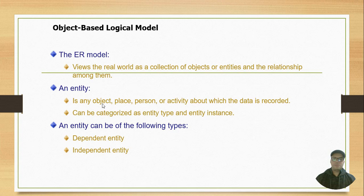An entity is any place, object, person, or activity about which the data is recorded. It can be categorized as entity type and instance. An entity can be anything in this world—everything is an object.